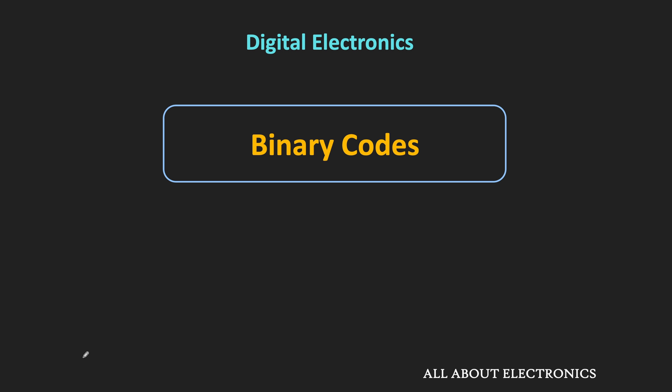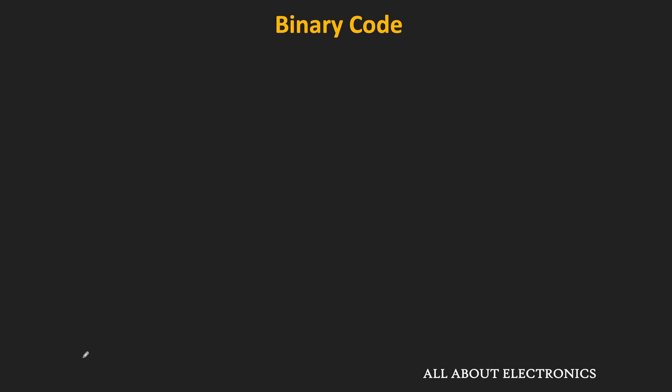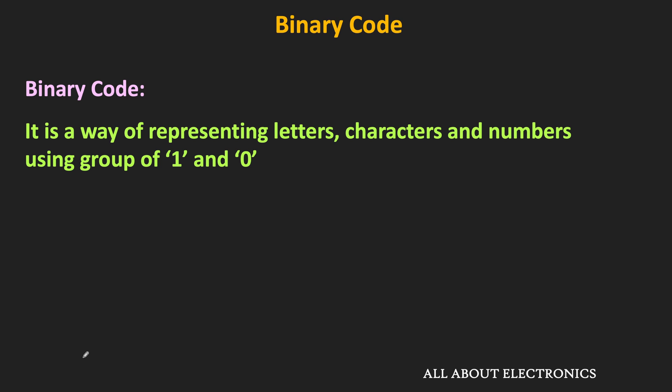Hey friends, welcome to the YouTube channel all about electronics. In this video and in the next couple of videos we will learn about the different binary codes. First let us understand what binary code is. Binary code is a way of representing numbers, letters, or characters using a group of ones and zeros. There are different ways these numbers or letters can be encoded, and over the years different binary codes have evolved. We will see some of the important binary codes which are commonly used nowadays.